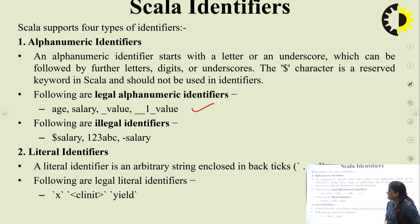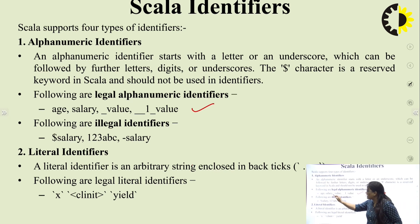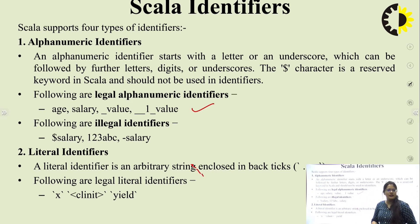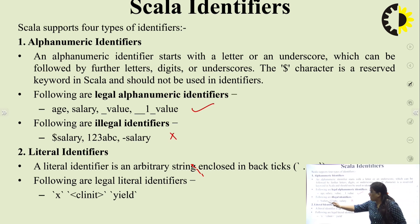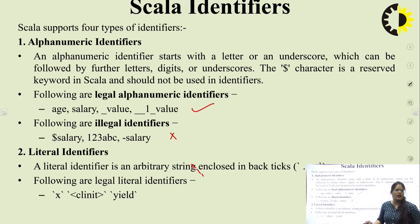These are the valid identifiers: age, salary, _value. These are the invalid identifiers: $salary, 123, ABC — these are invalid because they start with a dollar sign or digit.